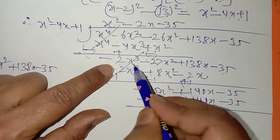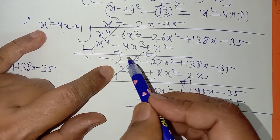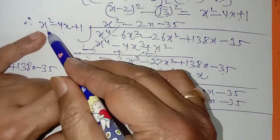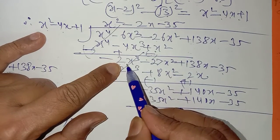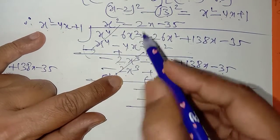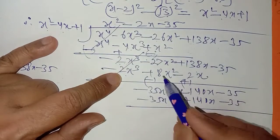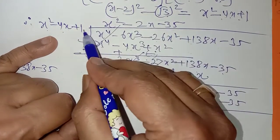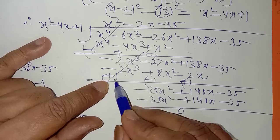یہاں پر minus 2x cube ہے اور یہاں پر x square ہے، تو minus 2x سے multiply کروں گا۔ اس کو minus 2x سے کرا: minus 2x cube آ گیا، plus 8x square آ گیا، minus 2x آ گیا۔